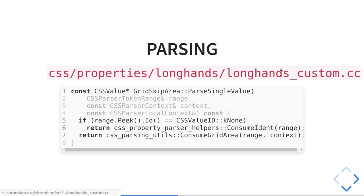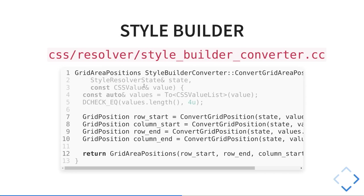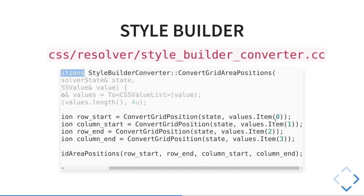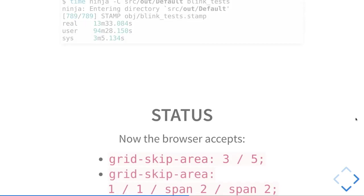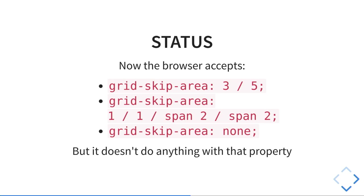Then the parsing. In this case, we go to the longhands because grid-skip-area is a longhand. If it's none, we just use none. Otherwise, we consume grid-area using the method we refactored before. So the parsing is again not very complex. Then we convert the CSS value from the parser into the grid-area-positions class — we get the items of the list and put them as row-start, column-start and all that. Not that complex. We build this thing, and at this stage we can parse it — the browser will accept this property. If you put it and go to the dev tools, you will see it's not struck through; it's fine. You can put one area or use span or names of lines.